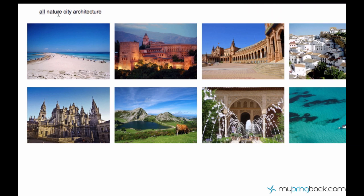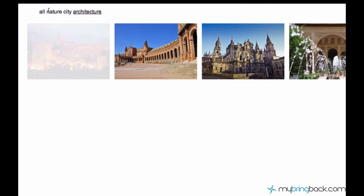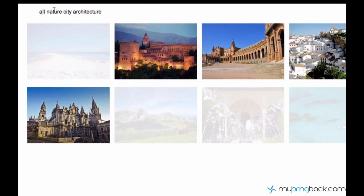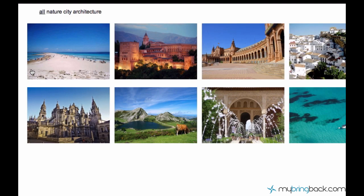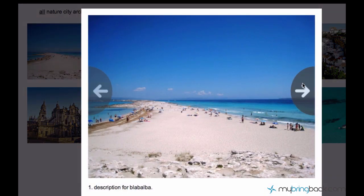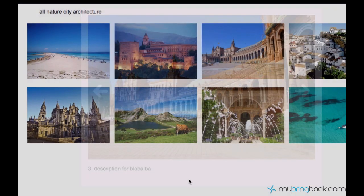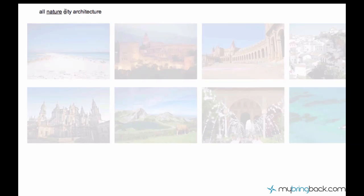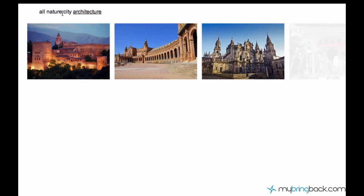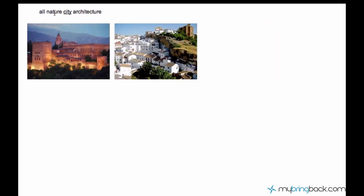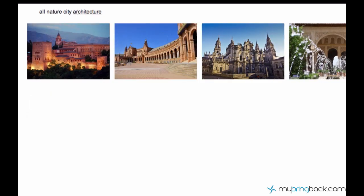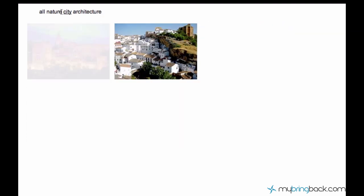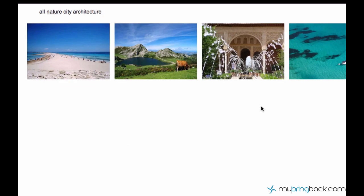Now we can switch between the images like we did before and we can go back to 'all', which is pretty cool. We also have these text descriptions below everywhere, and if you don't like the idea that the images jump a little when you switch between categories — well, it's because they take time to fade in and fade out. That's why you get this effect of jumping.